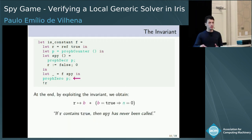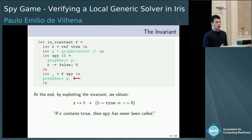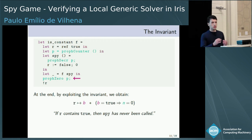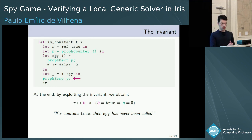By exploiting the invariant, at the end of the code we infer that if r contains true, then spy has never been called. The state of the reference r is b such that if b is true, then n — the number of times spy is called — is zero.